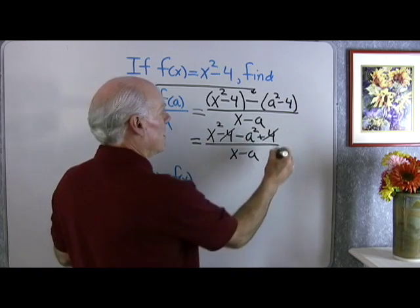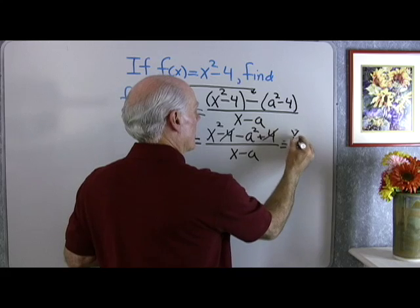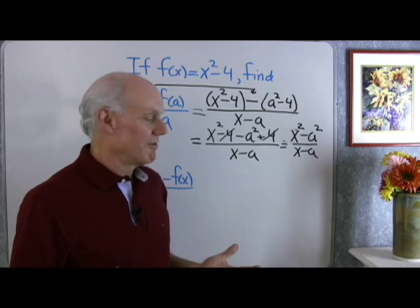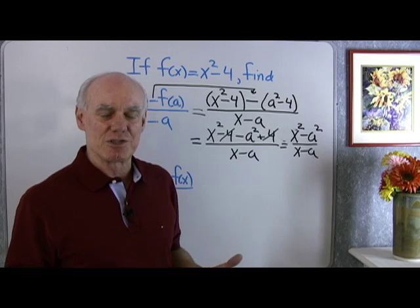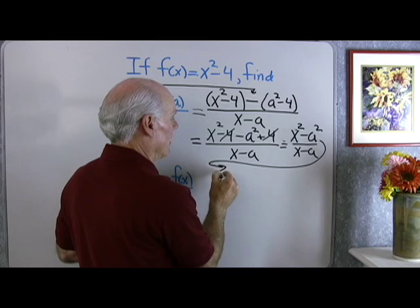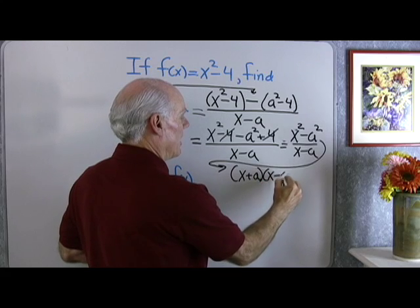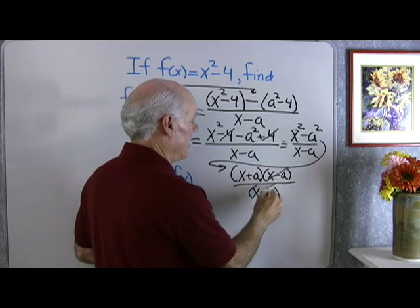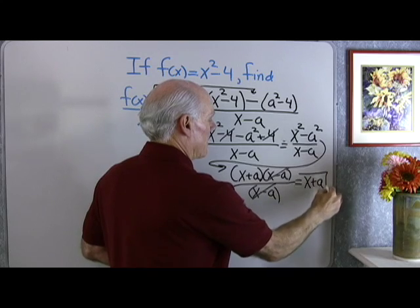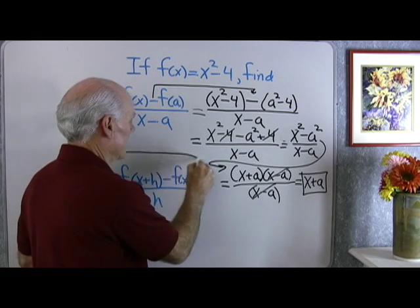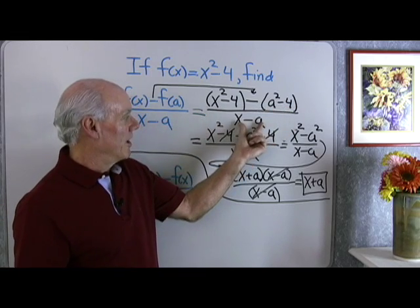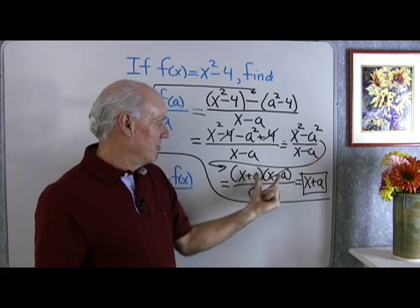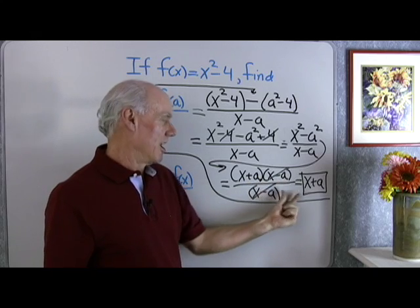I have x squared minus a squared over x minus a. I want to reduce that to lowest terms, but I can't divide out yet — I have to factor the numerator to see if there are common factors with the denominator. So I factor the numerator into (x+a)(x-a), all divided by x minus a. Now I can divide out that common factor of x minus a. What's left is x plus a. That's the answer — it simplifies very nicely. Make sure you factor the numerator and denominator, then divide out common factors.